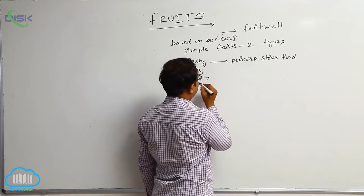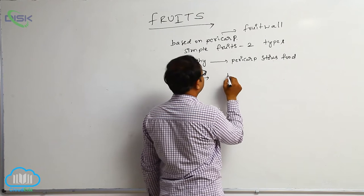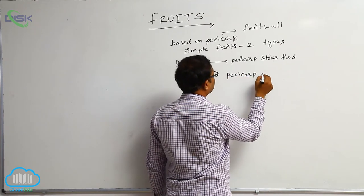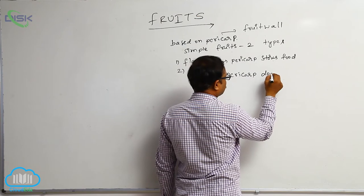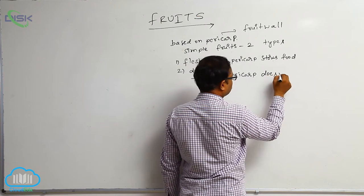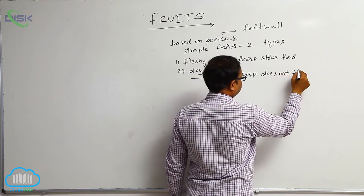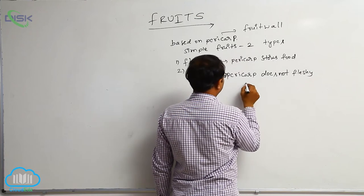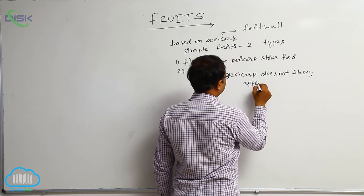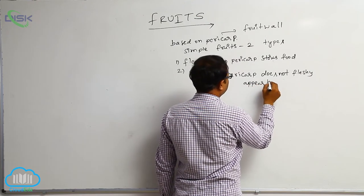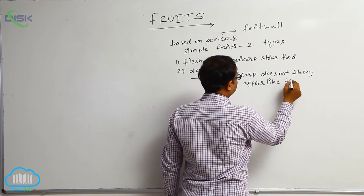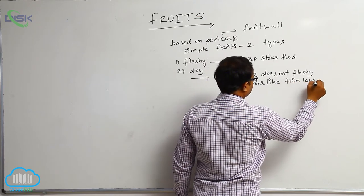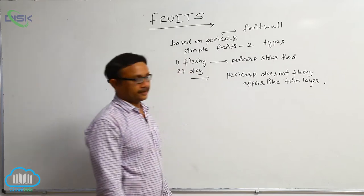Dry fruits: if the pericarp does not store food and is not fleshy — it appears like a thin layer — then they are known as dry fruits.